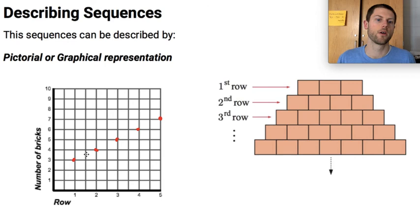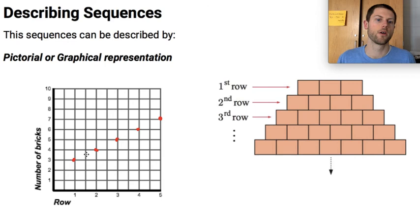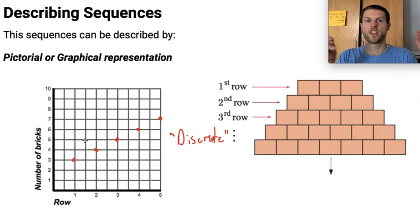I'm not going to have a row of 3 and a half bricks, or I'm not going to have a row 2.5. All of these are distinct natural counting numbers. So we would call this actually a discrete function, where I don't have a continuous function, this is discrete, where I have these defined points, and I don't have all this infinite stuff going in between these things. But this would be my pictorial representation of this sequence.